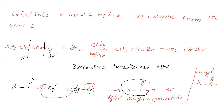So the silver salt of carboxylic acid reacts with Bromine to give Acyl Hypo Bromite. Next, this O-Br bond contains two electrons and goes for homolytic cleavage.